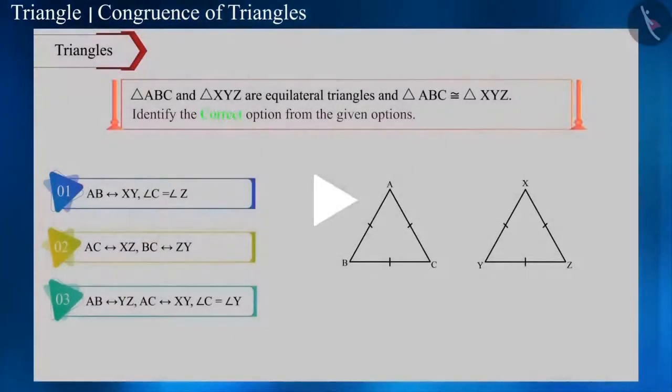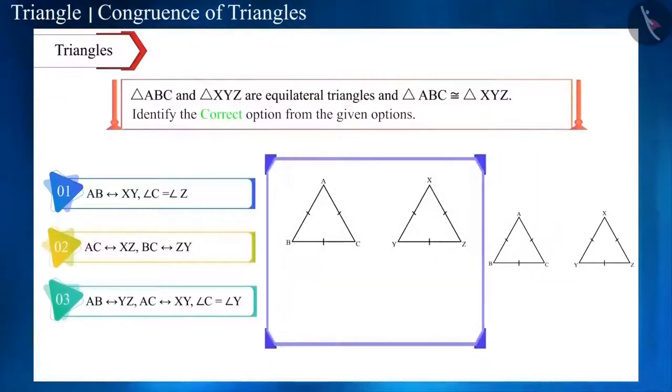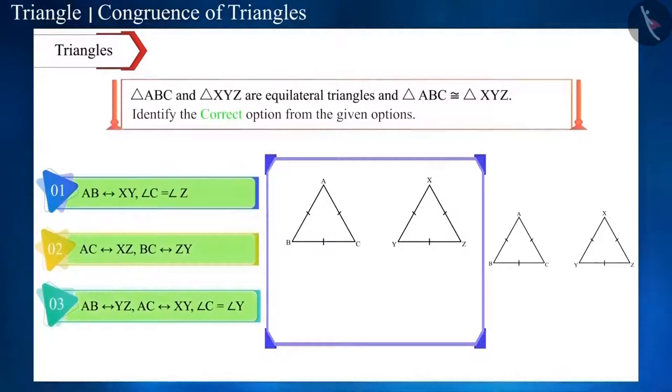Friends, these two triangles are equilateral triangles and all the sides and angles of equilateral triangles are equal. Also, these two triangles are congruent to each other. That is, any side of triangle ABC will be equal to all the sides of triangle XYZ and, similarly, the angles of one triangle will be equal to all the angles of the other triangle. Therefore, all the given options are correct.